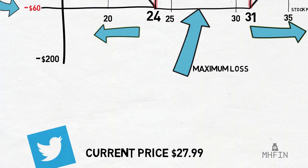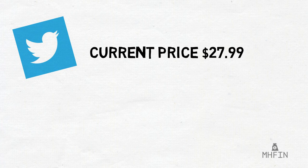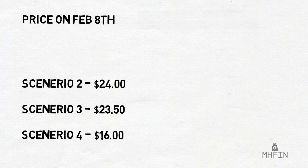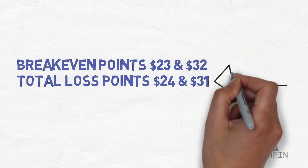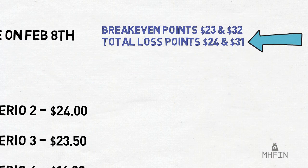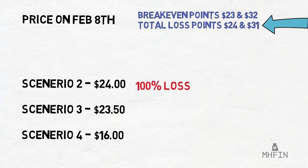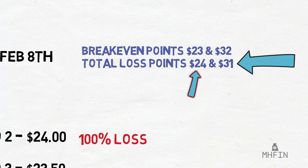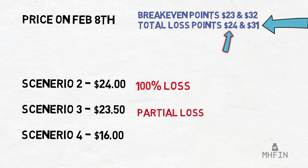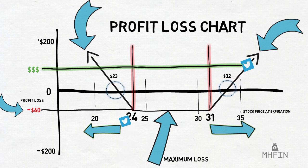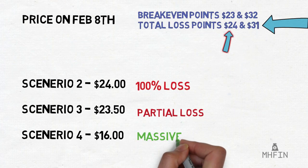Let's take a look at a couple more scenarios involving Twitter. Scenario 2: Twitter finishes at $24 at the date of expiration. Because $24 falls between the total loss points of $24 and $31, we will incur a 100% loss, which means a $60 loss total. Scenario 3: $23.50. Because this falls between the breakeven points and the total loss points, we will incur a partial loss. Finally, Scenario 4: $16. Because $16 falls well below the breakeven point of $23, we will incur a massive profit.